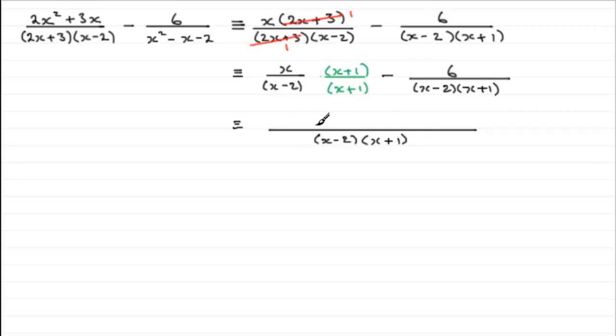So on the top here, we've got just x multiplied by the x plus 1, and then we've got minus the 6.